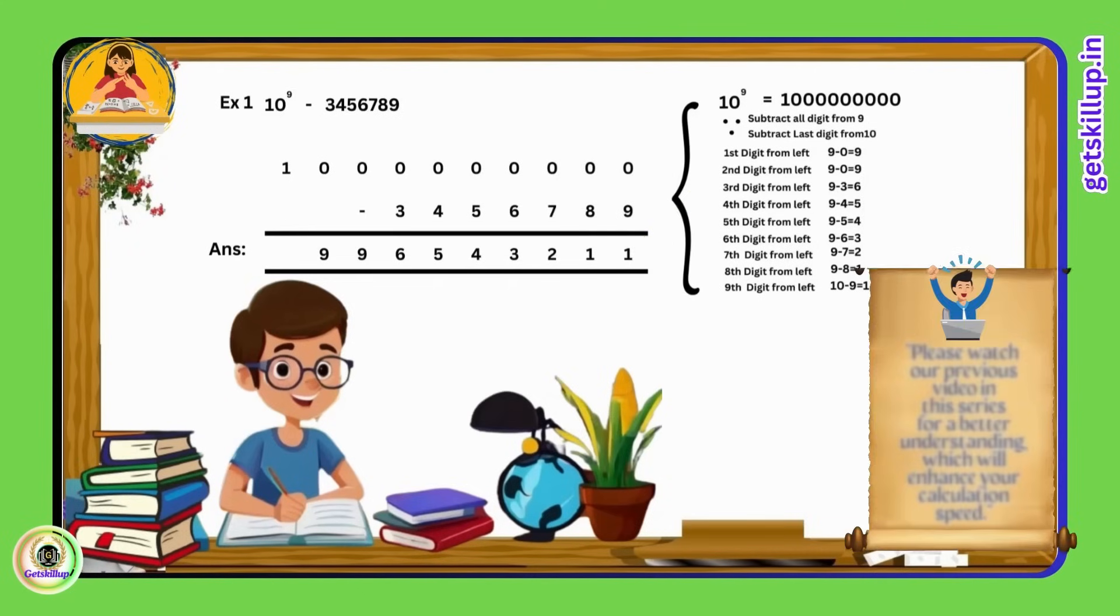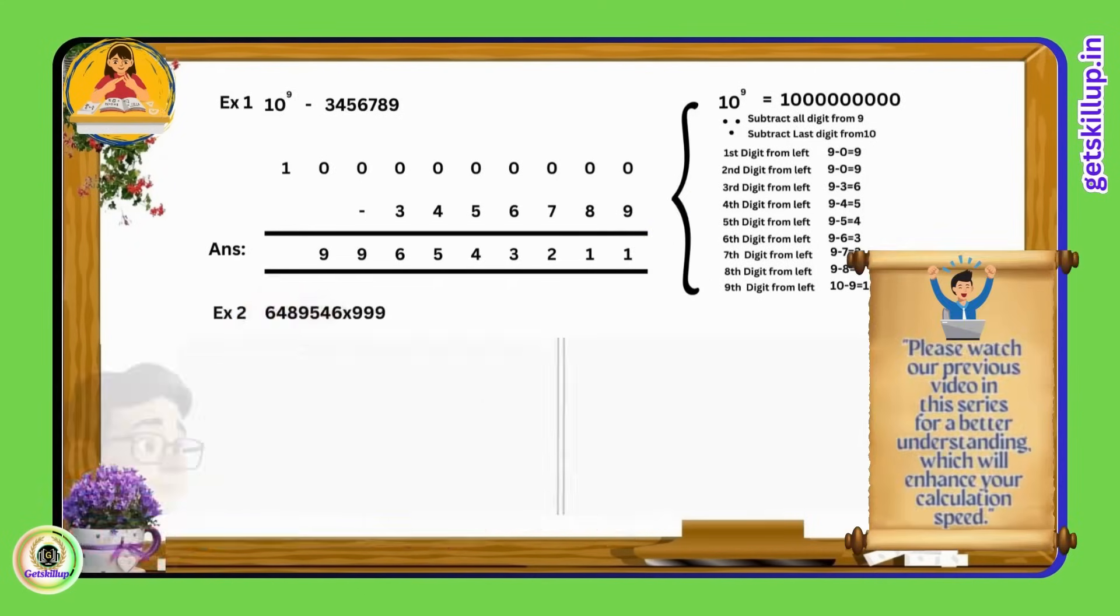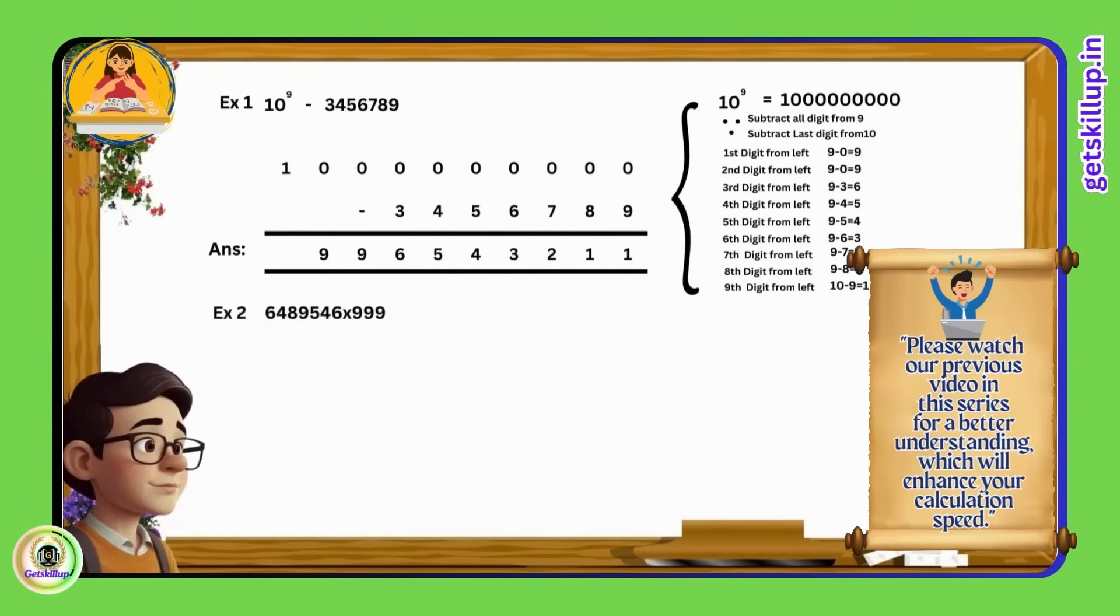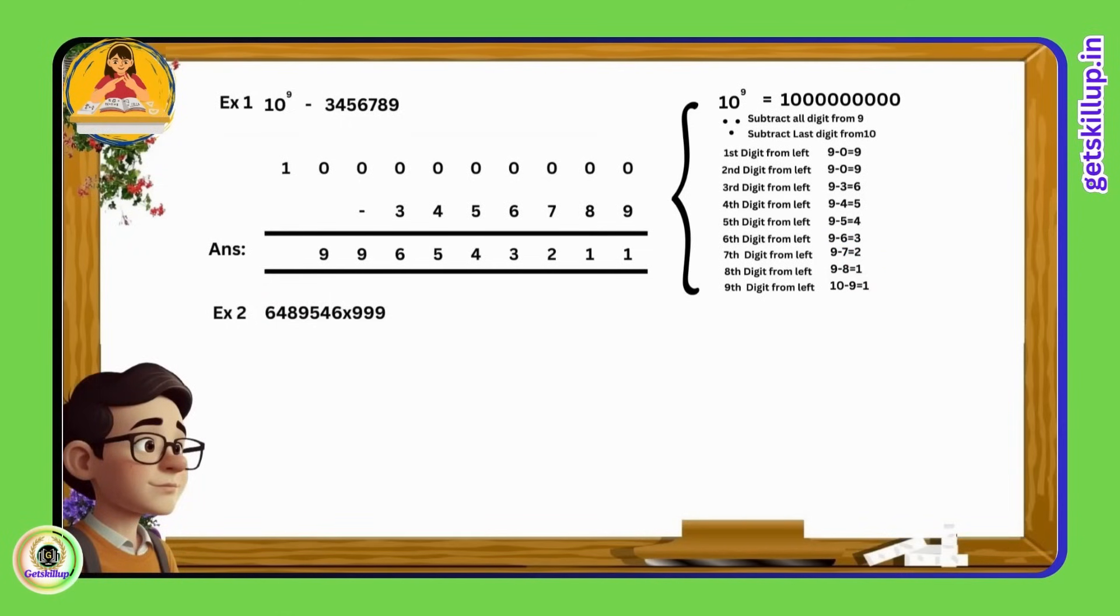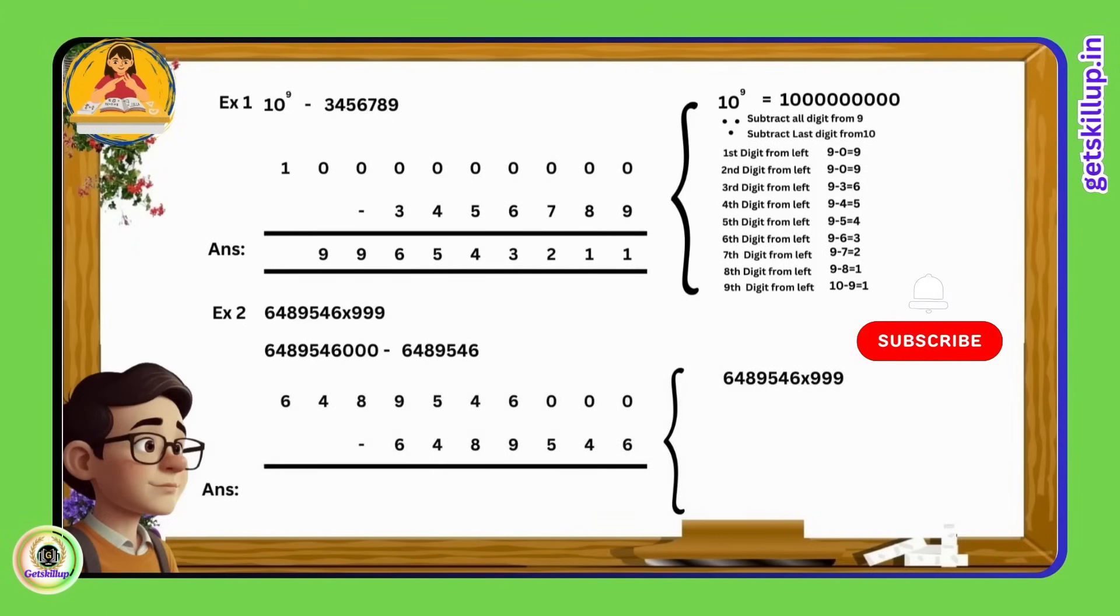Example 2: 64 lakhs 89,546 multiplied by 999. First, we add three zeros to the right of the number, 648 crores 95,46,000. And then we subtract the original number, 64 lakhs 89,546.